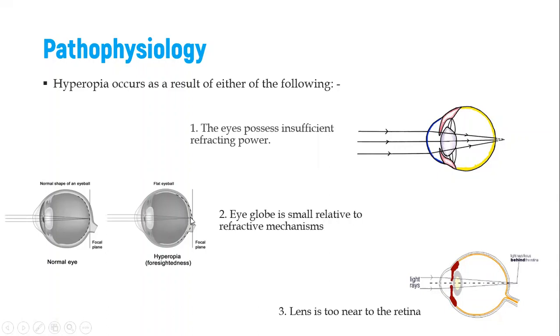Also, if we have a shorter eyeball, that means that the convergence will be behind. And the third reason is if the lens is too near to the retina. If the anterior-posterior length between the lens and the retina is short, then we are going to have the image formed behind.